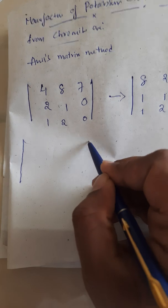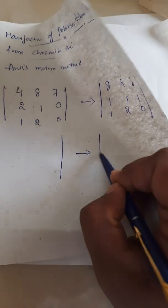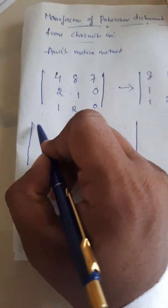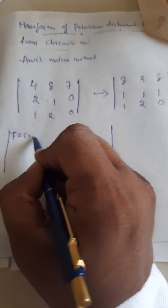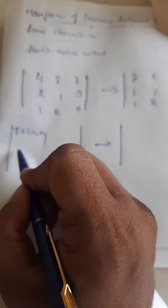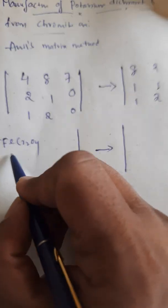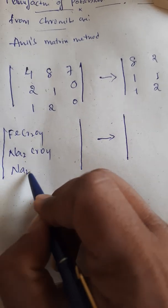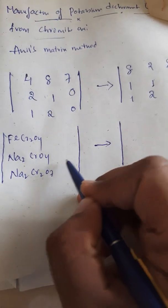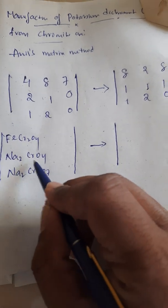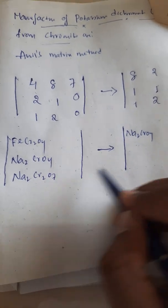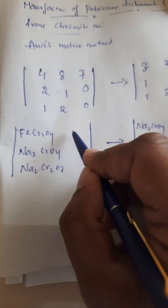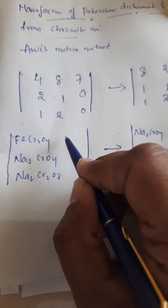Now we write the compound matrix. In the first compound matrix, the first element is chromite ore: FeCr₂O₄. The second element is Na₂CrO₄, and the third is Na₂Cr₂O₇. In the second compound matrix, the first element is Na₂CrO₄, the second is Na₂Cr₂O₇, and the third is K₂Cr₂O₇.